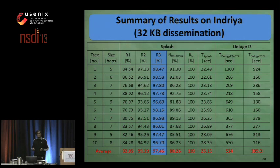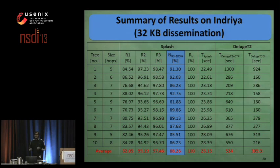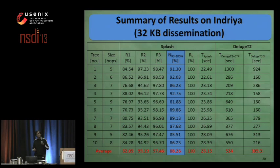For SPLASH, after its three rounds of dissemination, average reliability per node is about 97.5%, and 88% of the nodes have already downloaded the entire data object. The remaining nodes use local recovery to give 100% reliability at every node.